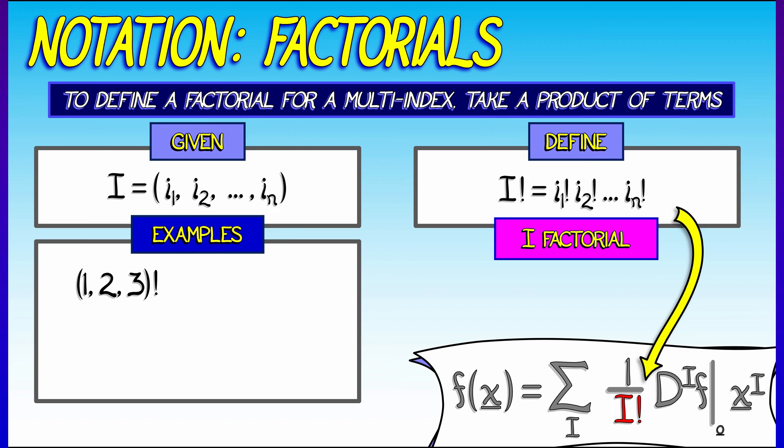As an example, let's say we have (1, 2, 3) factorial. What's that? That's 1 factorial times 2 factorial times 3 factorial. That's 2 times 6 is 12. Okay, good. What about (2, 2, 2) factorial? Be careful. This is not the same as 6 factorial. It's really 2 factorial times 2 factorial times 2 factorial. That's equal to 8.